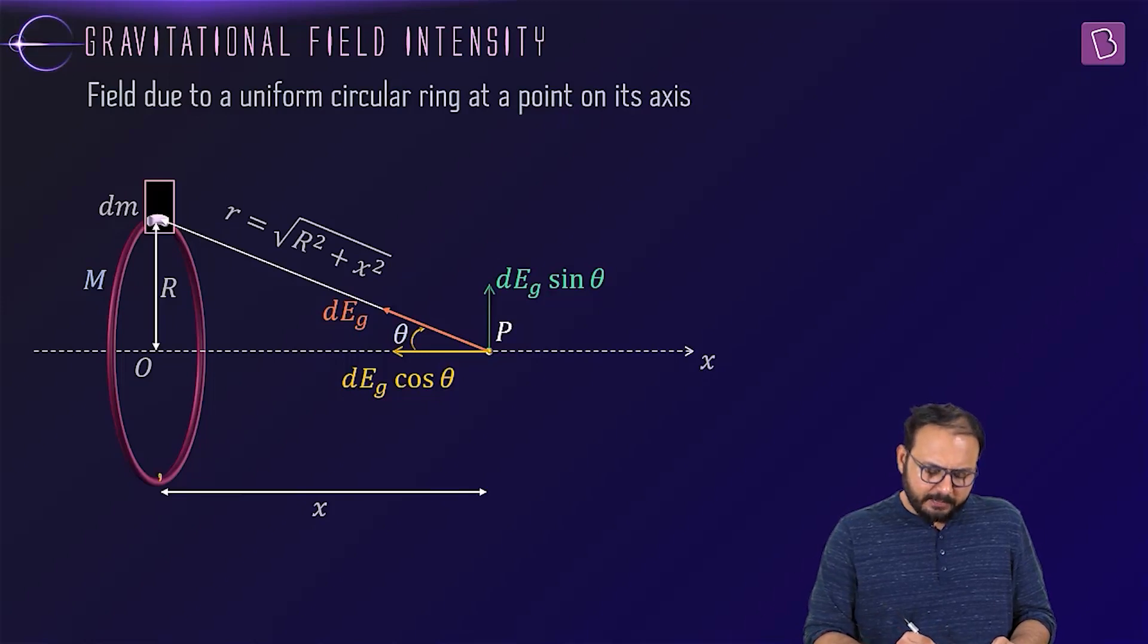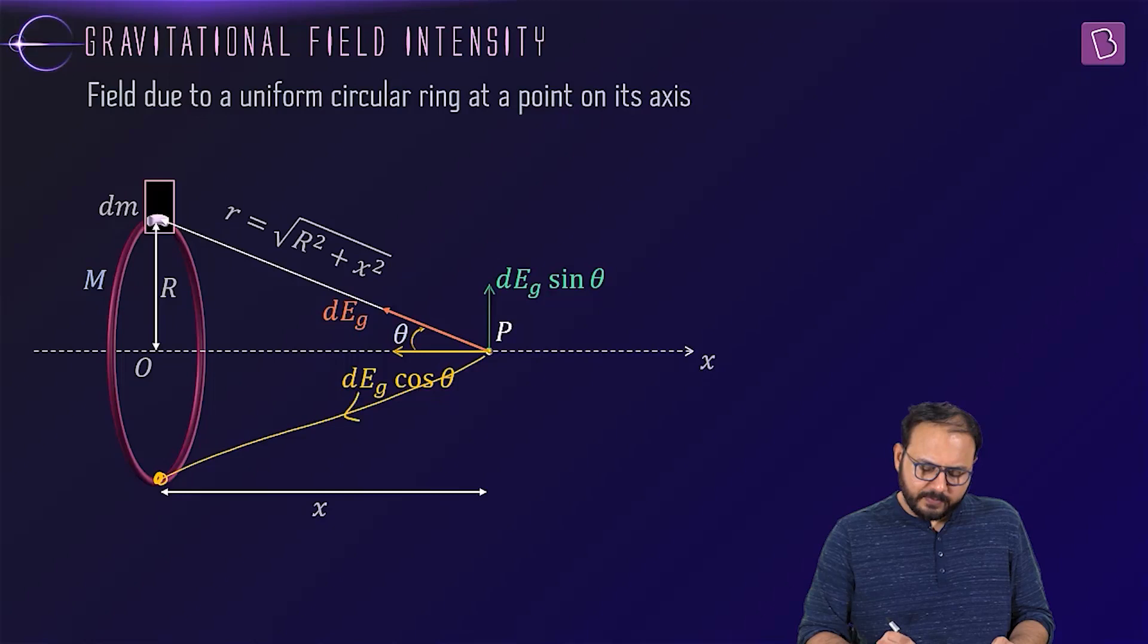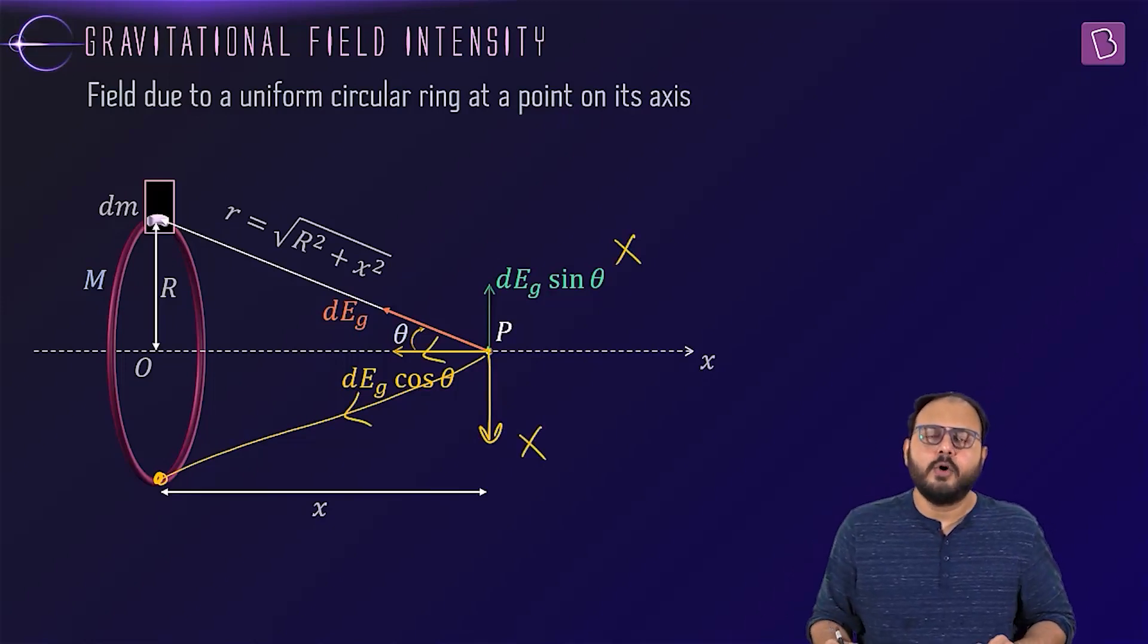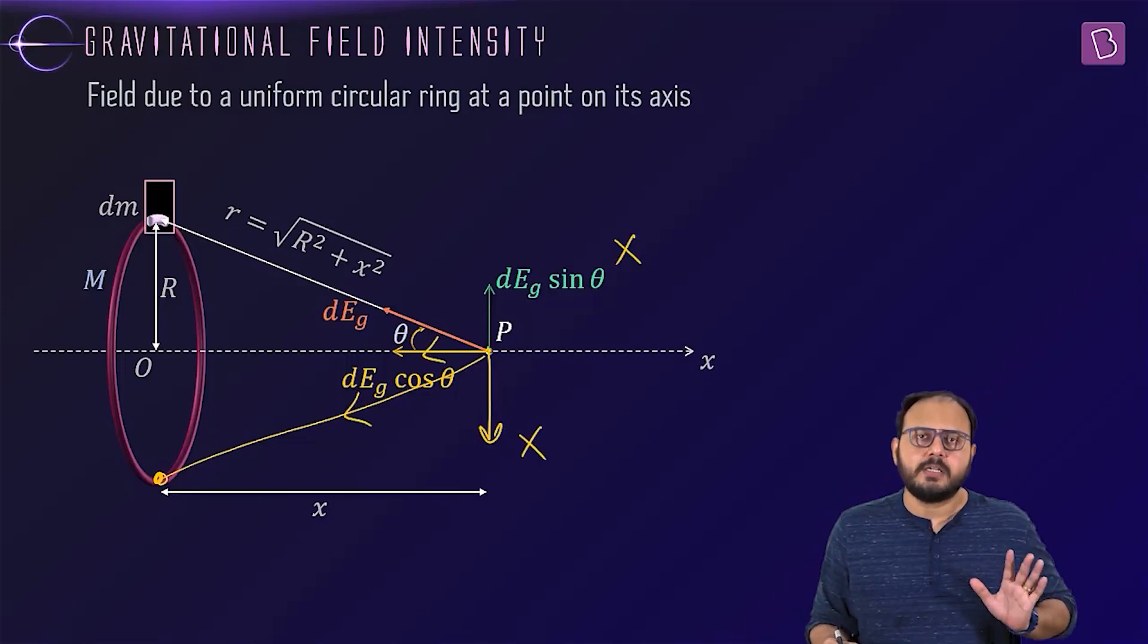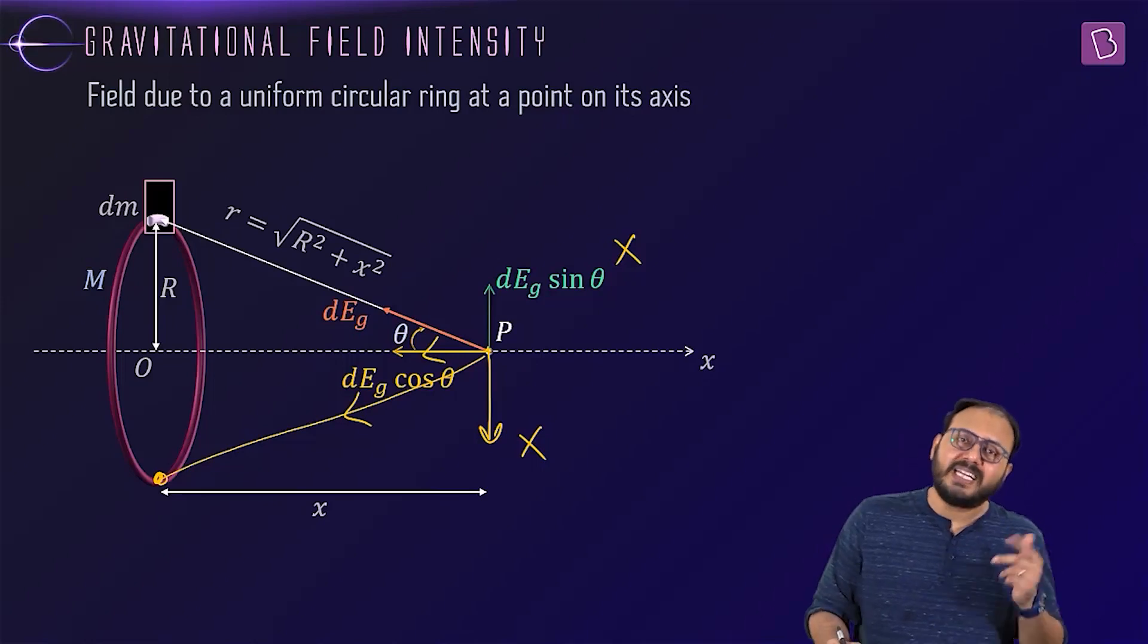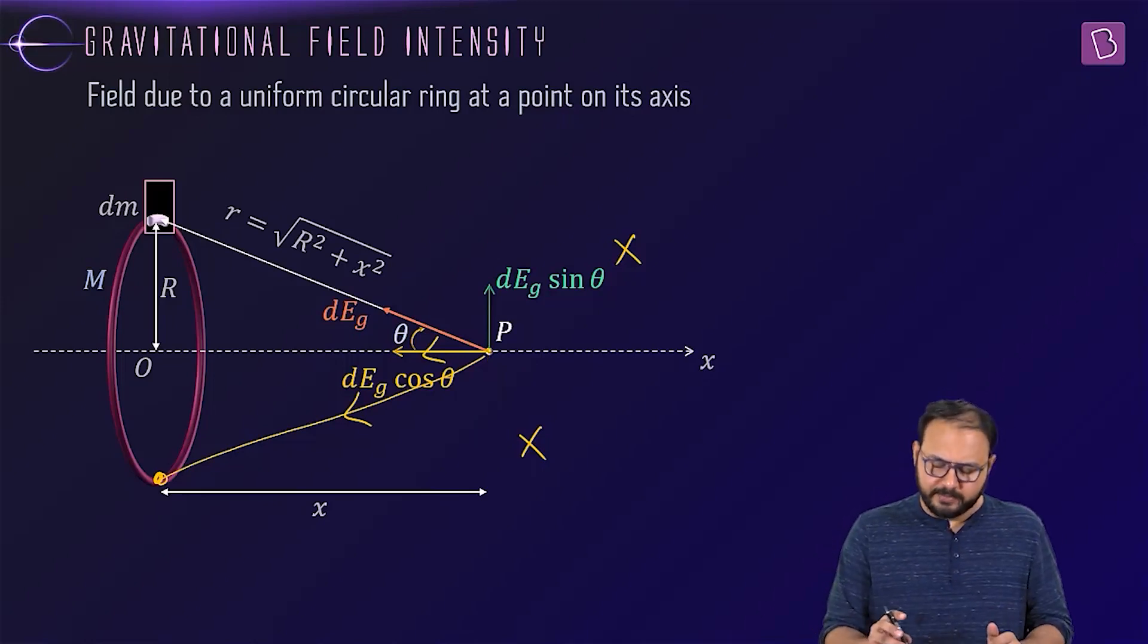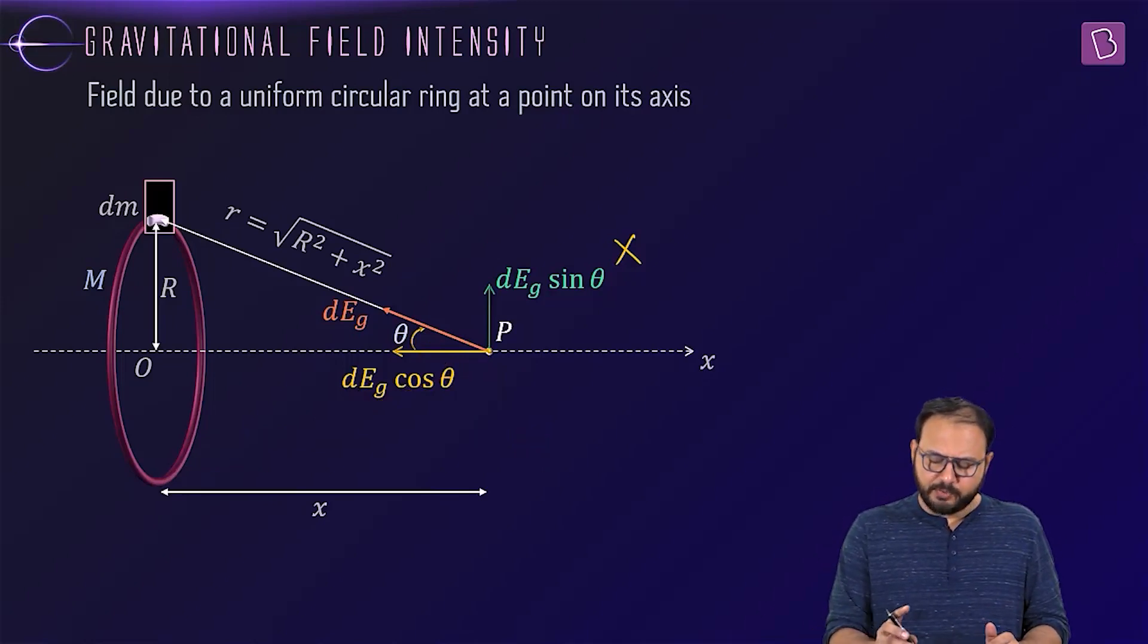Do you agree that the mirror image of dm will have a field like this and will have two components like this? So do you agree that this sin theta component in my diagram is getting cancelled or this component is redundant? So which is the effective component or retained component? The axial component. Very good. Please absorb that information so far.